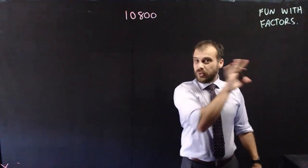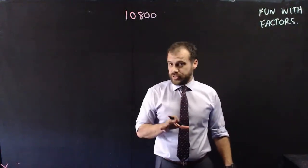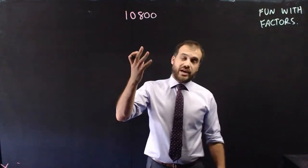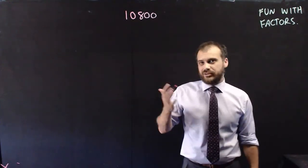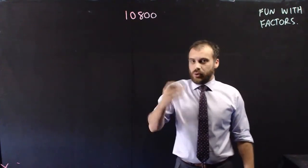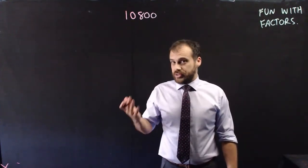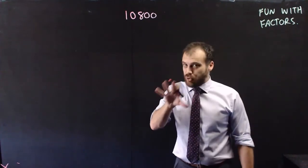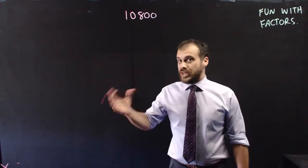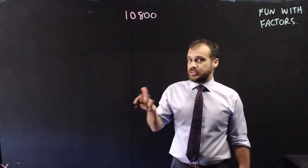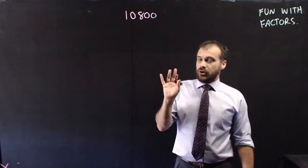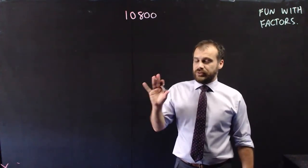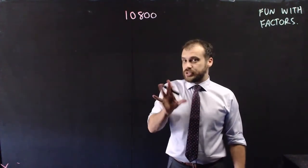In this video we're going to be talking all about factors. We're going to figure out how many factors the number 10,800 has, what the factors of 10,800 are, and we're going to talk about the prime factorization of 10,800 which you've done before. There's going to be a little bit of ground covered in this video so buckle up.